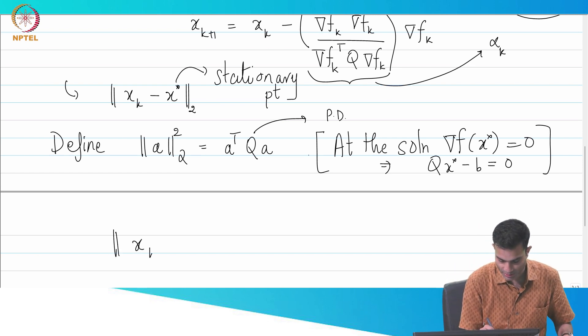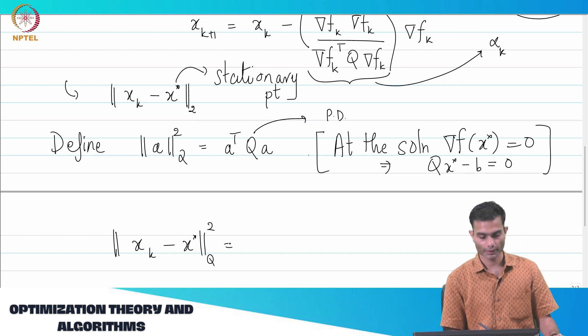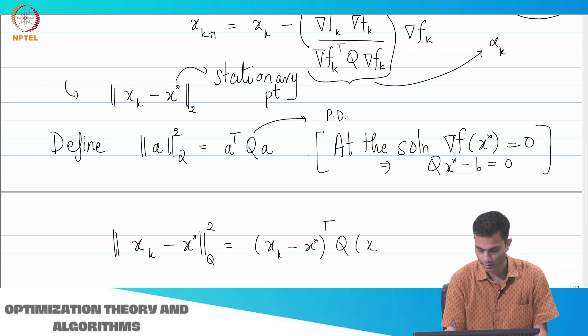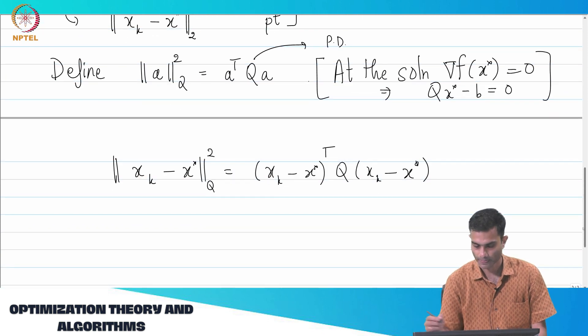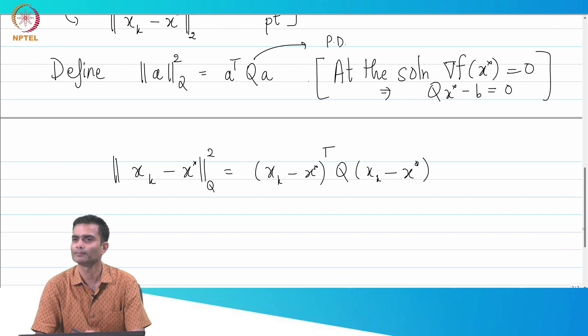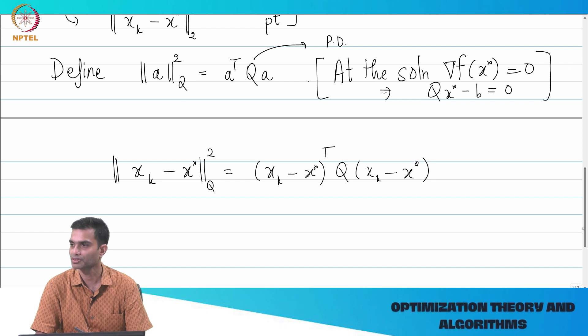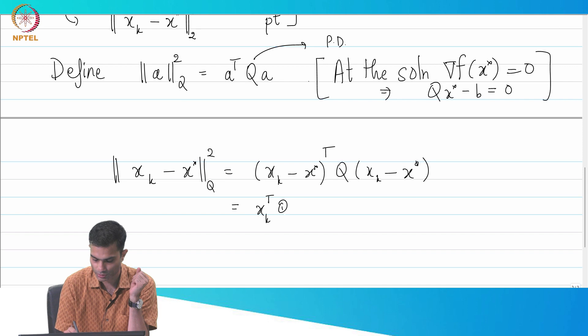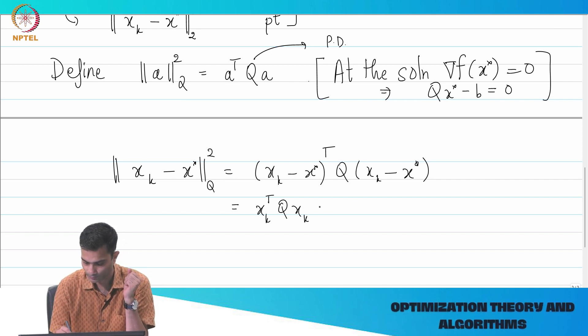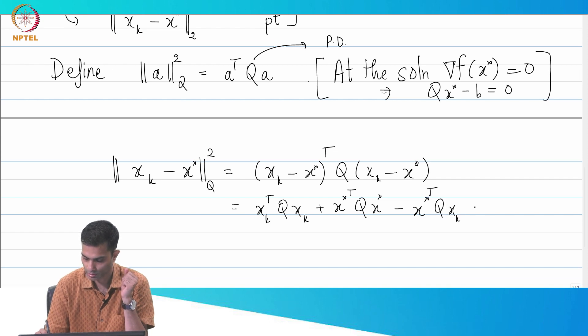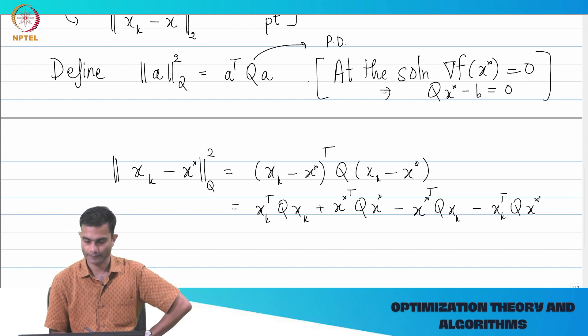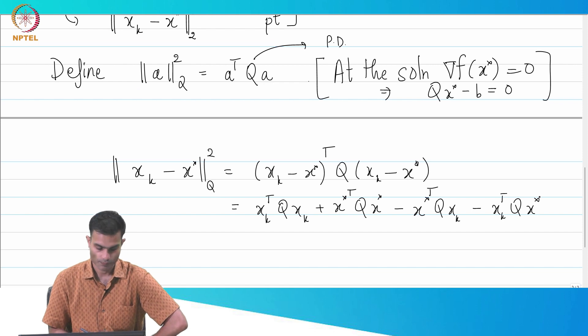So what we need to compute is this. We will just plug in the definition of this norm. I am going to get x_k minus x star transpose Q x_k minus x star. If I open this up, how many terms do I expect? 2, 4, 6, 8, how many terms? 4 terms.